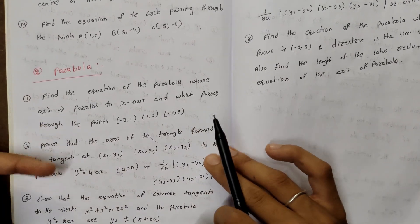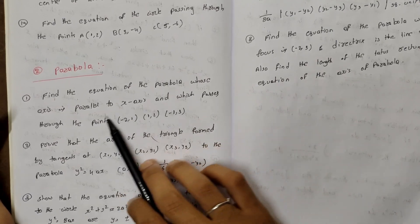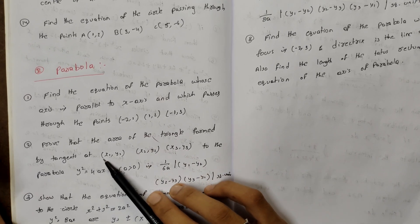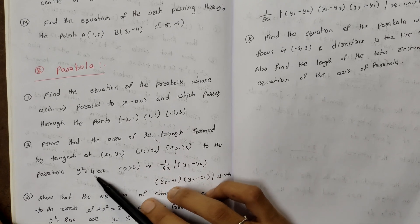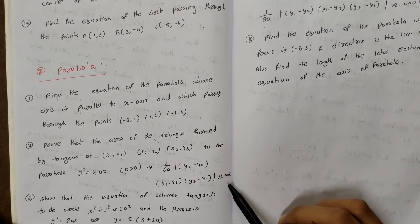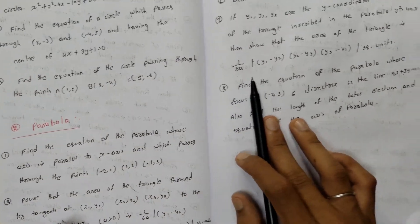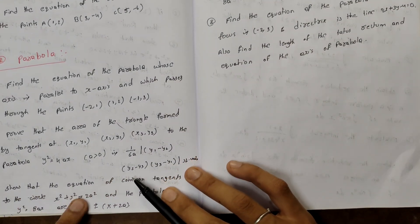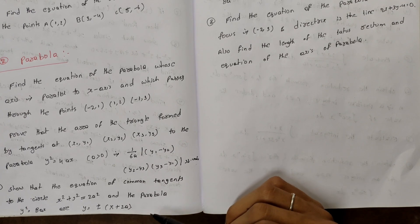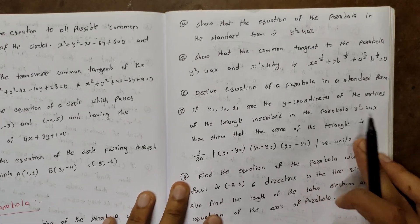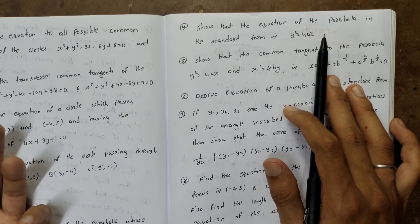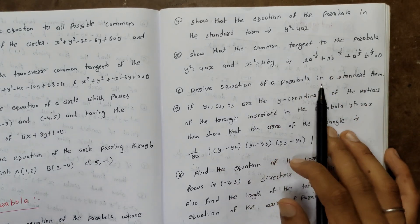Overall 14 parabola problems. First: find the equation of the parabola whose axis is parallel to the x-axis passing through (-2,1), (1,2), (-1,3). Prove that the area of the triangle formed by the tangents at (x₁,y₁), (x₂,y₂), (x₃,y₃) to the parabola y²=4ax (a>0) is (1/8a)|y₁-y₂||y₂-y₃||y₃-y₁| square units.